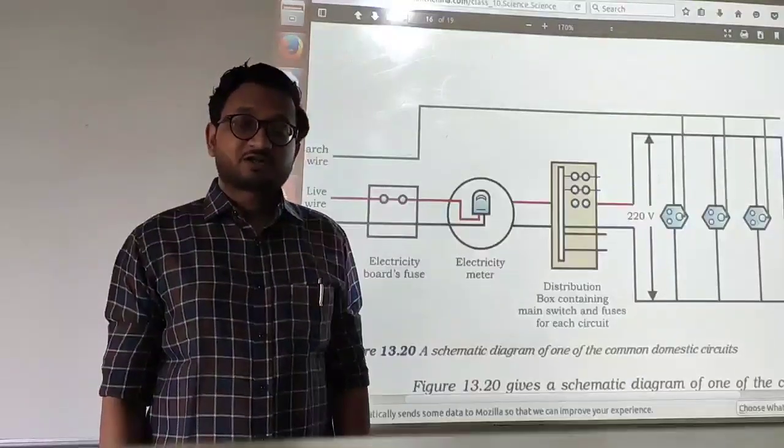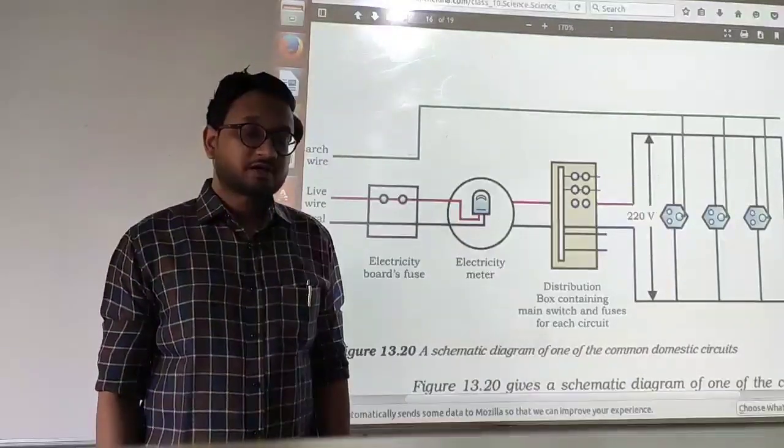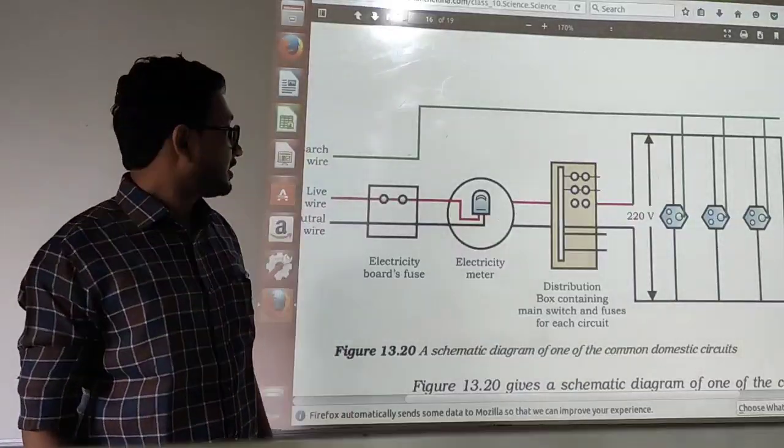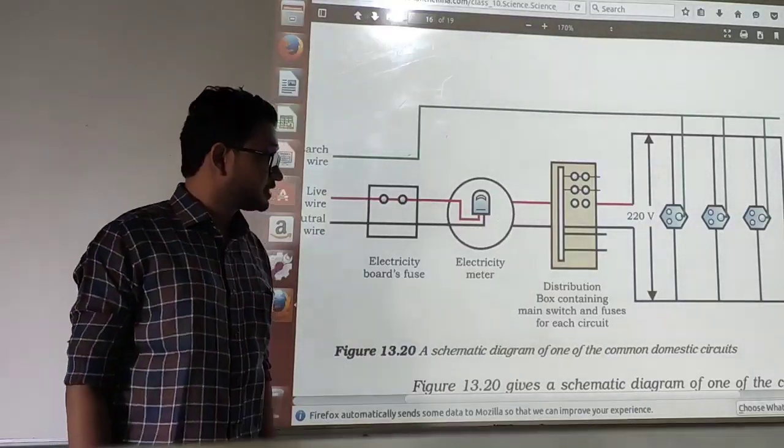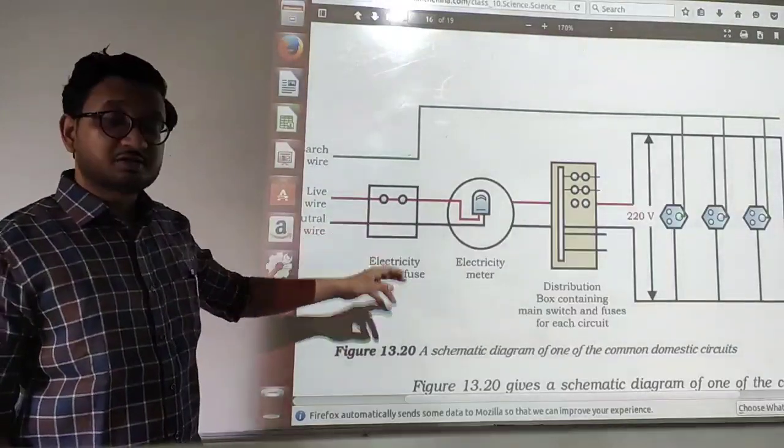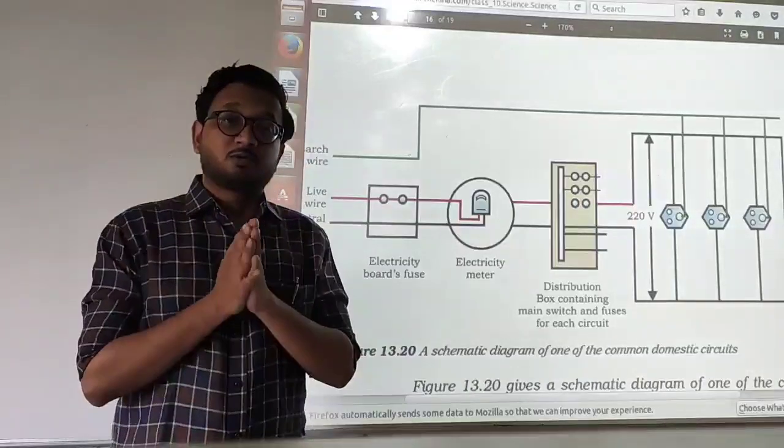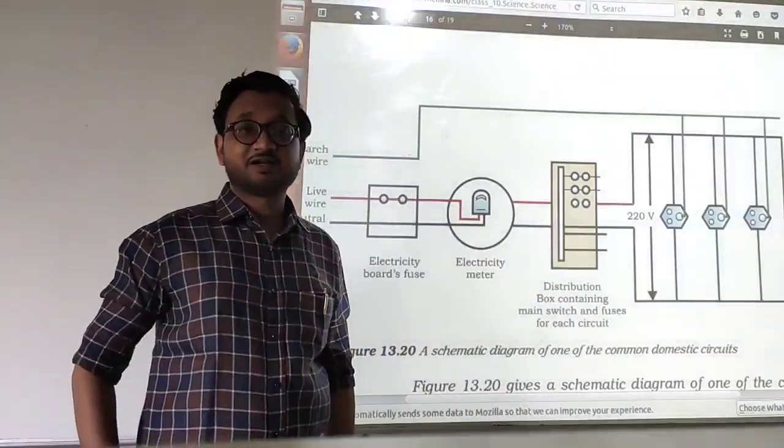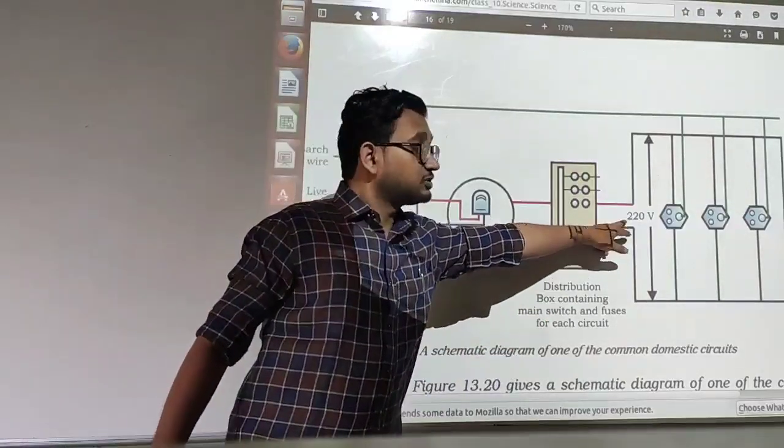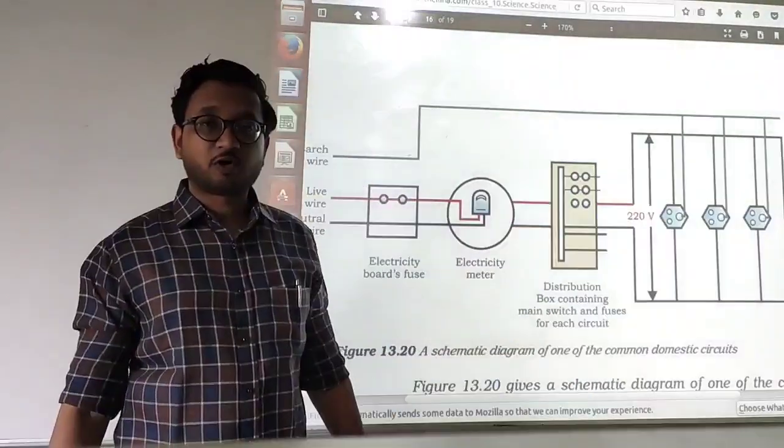We know that there are two types of current: AC current and DC current. I have said this before that in our house we use AC current and this is the diagram from your textbook. This shows the connection in our hub, how the different appliances are connected and worldwide we use 220 volts as a standard potential difference for all the appliances.